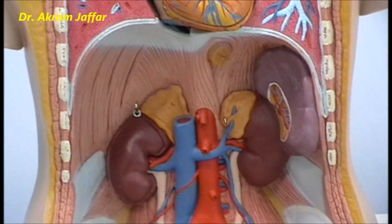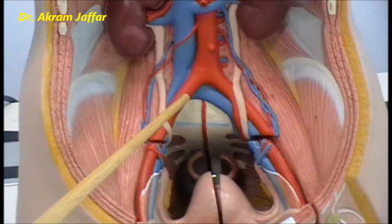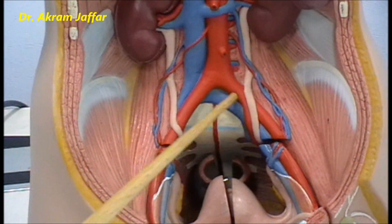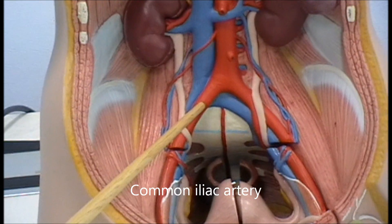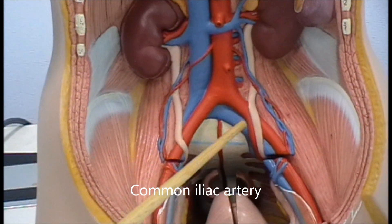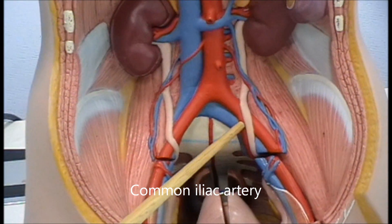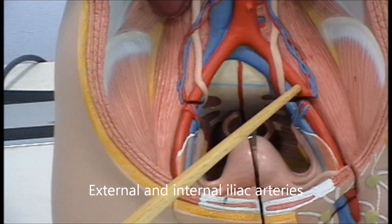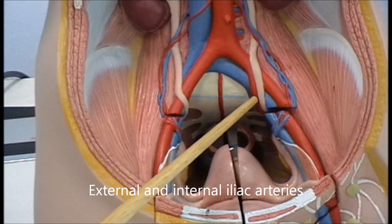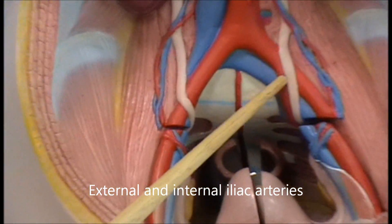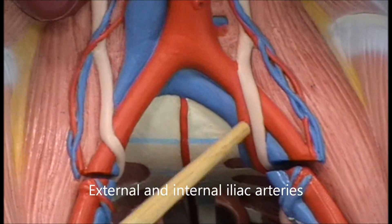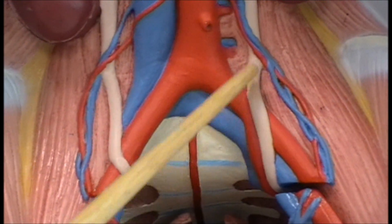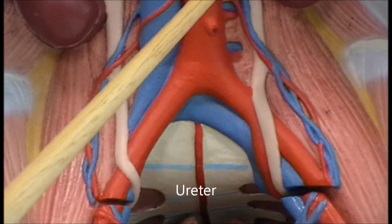The abdominal aorta bifurcates at the level of L4 into the common iliac arteries. Each common iliac artery bifurcates into an external iliac and an internal iliac artery. At the site of bifurcation of the common iliac artery, the ureter crosses it superficially. The ureters, as you can see, are also crossed by the gonadal vessels.